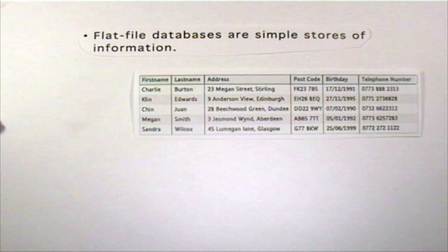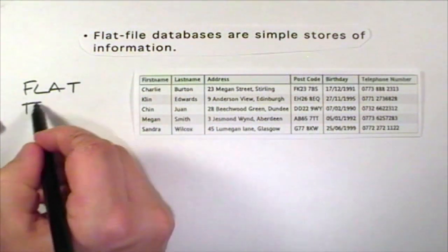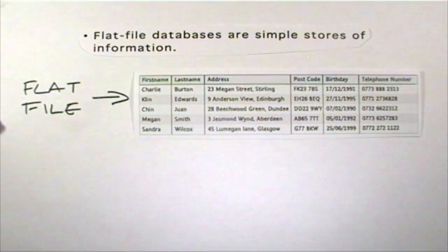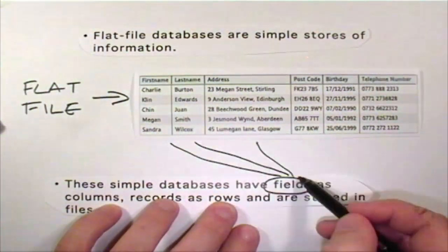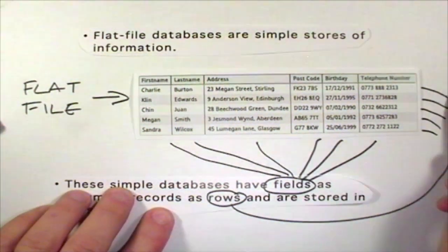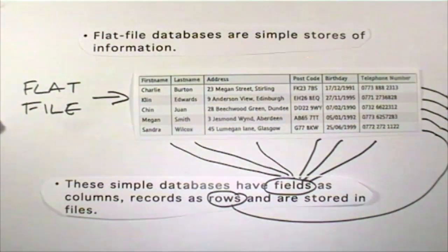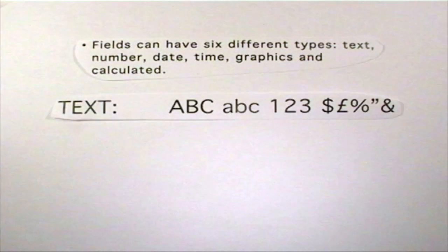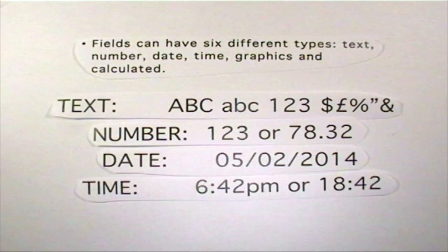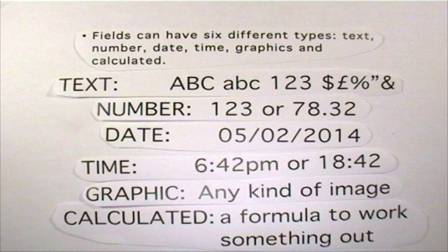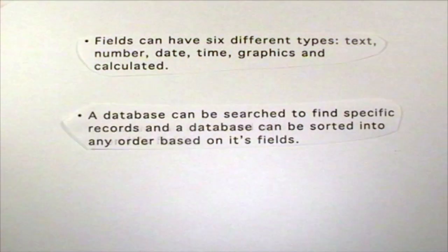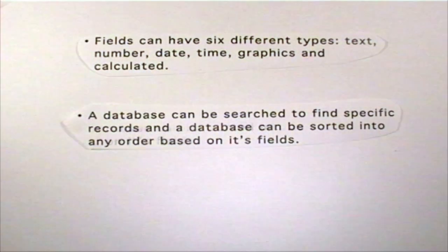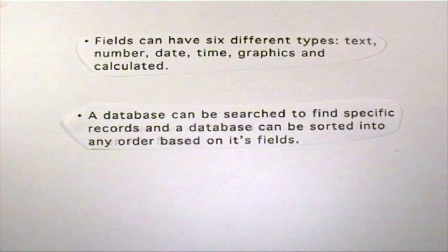So some things to remember: flat file databases are simple stores of information. These simple databases have fields as columns, records as rows, and are stored in files. Fields can have six different types: text, number, date, time, graphics, and calculated. A database can be searched to find specific records, and a database can be sorted into any order based on its fields.